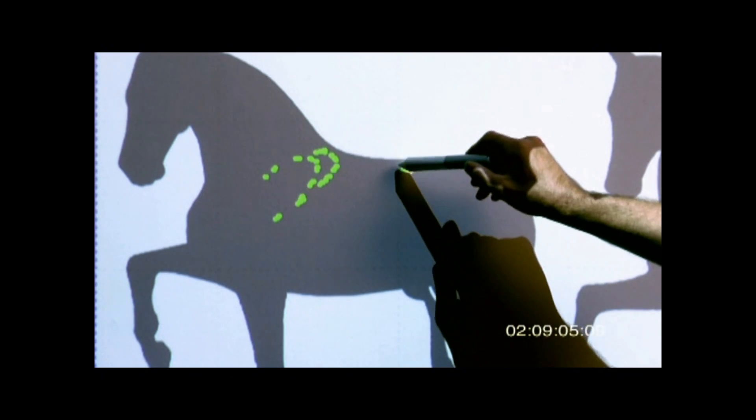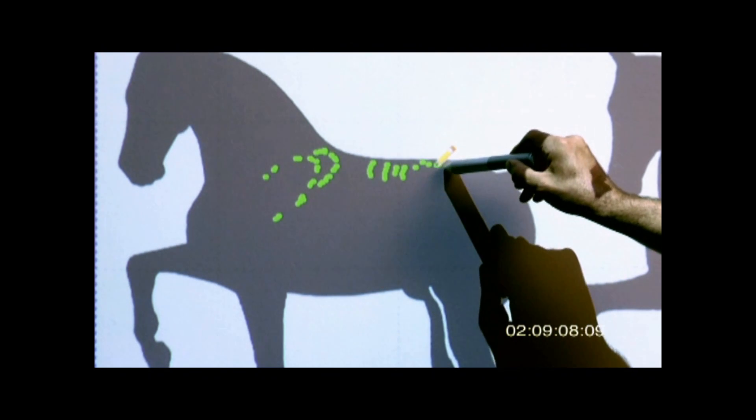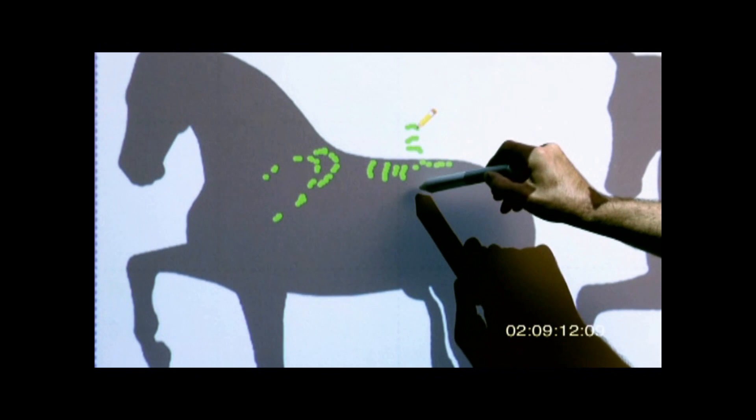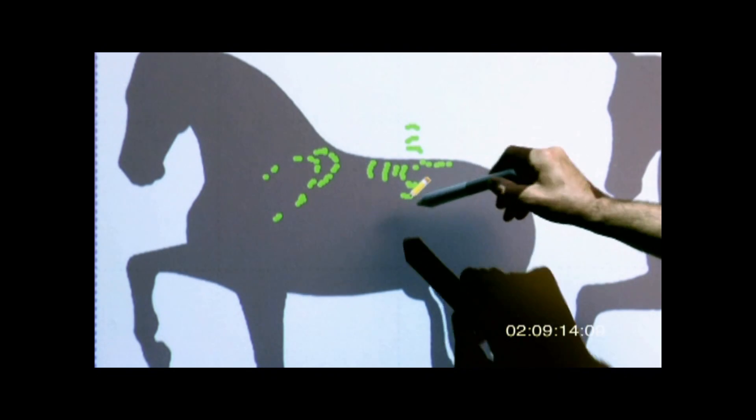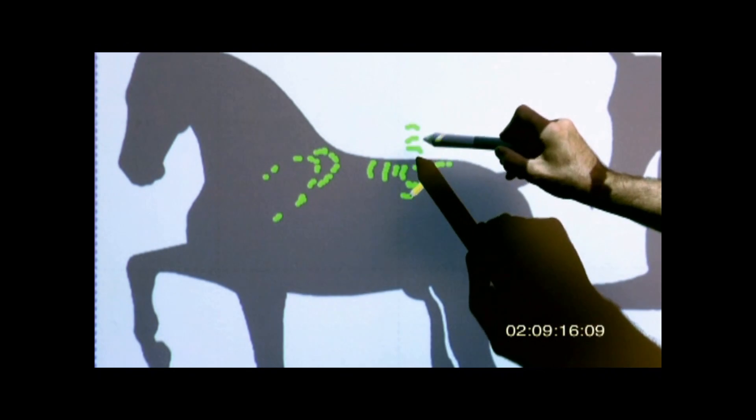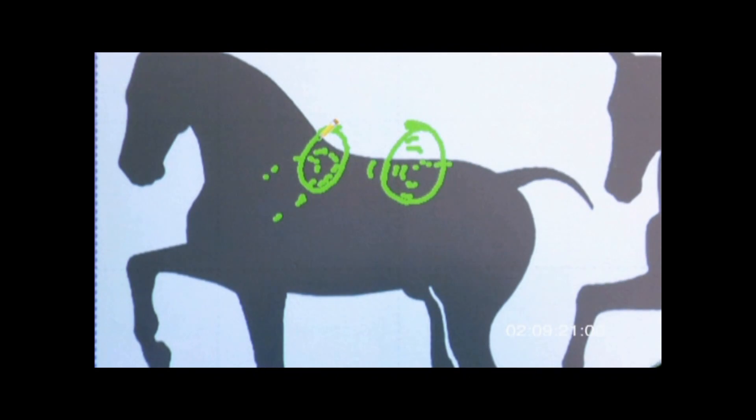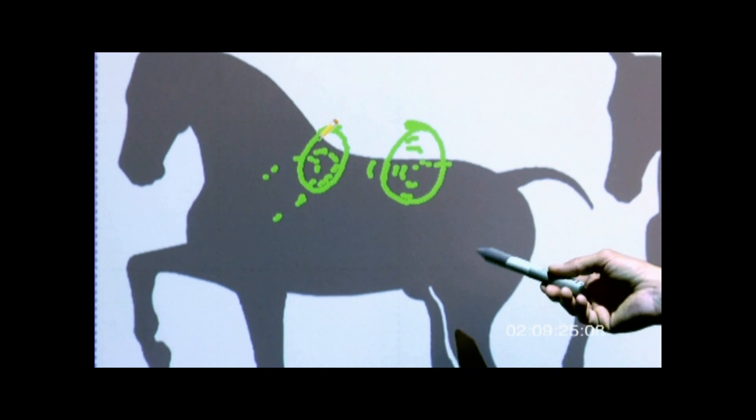Right here, where the last rib is and where the lumbar starts, we have also the biggest movement where the back goes up and down. So we have a lot of movement in this vicinity and in this vicinity. And sweat is created by airflow and friction.